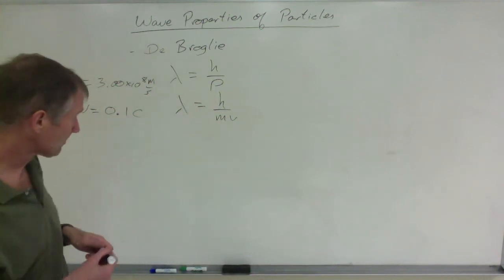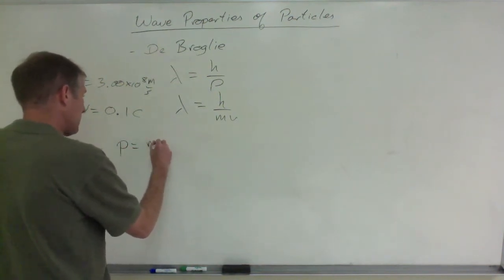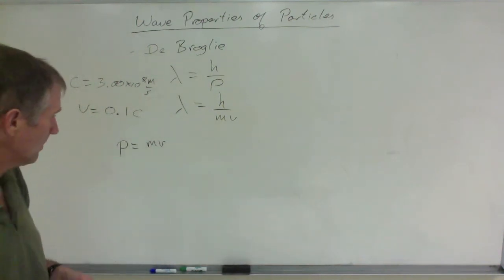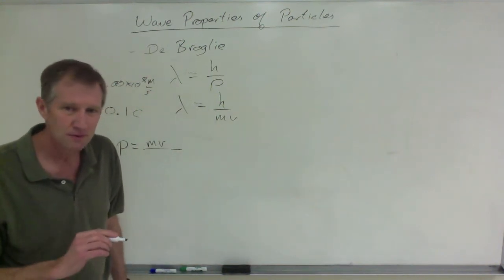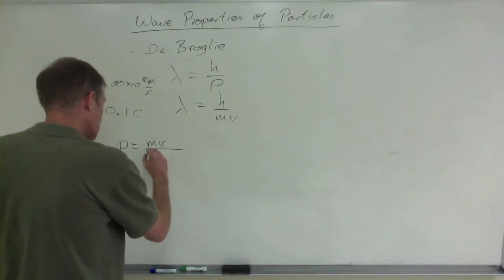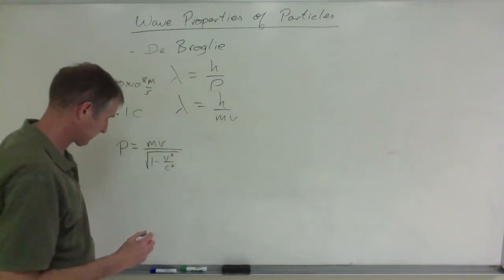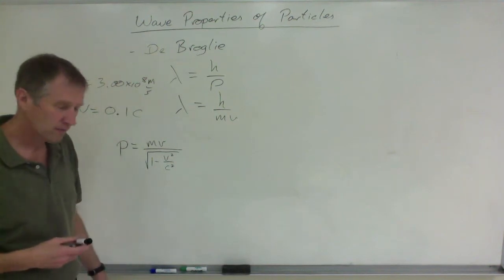The way you handle that: the momentum of something is equal to m times v, that's true, we studied that months ago, but I didn't tell you the whole story. It's actually m times v divided by the square root of 1 minus that speed, that velocity squared, over c squared. That takes into account relativity.